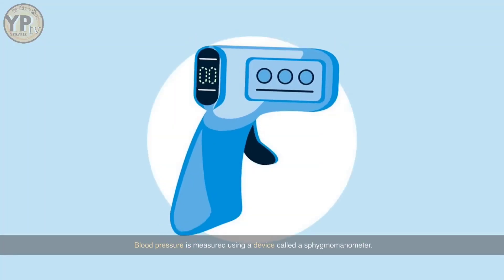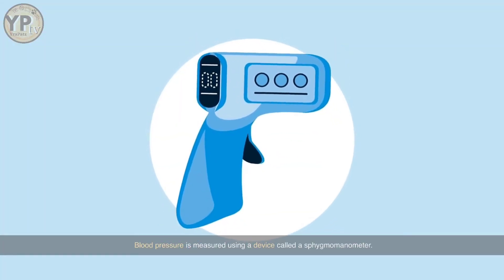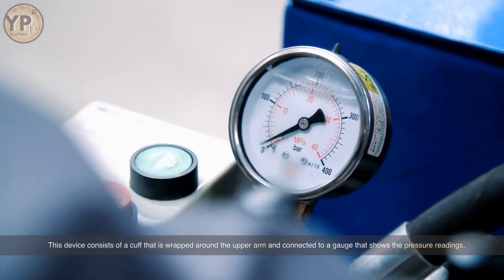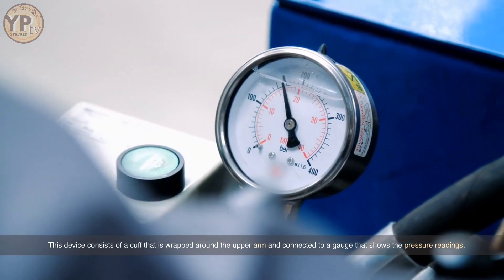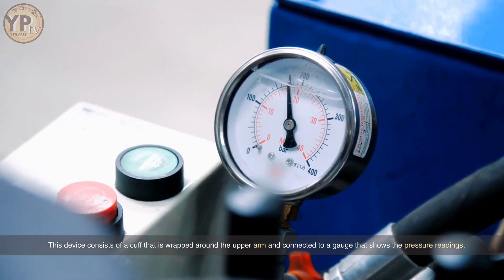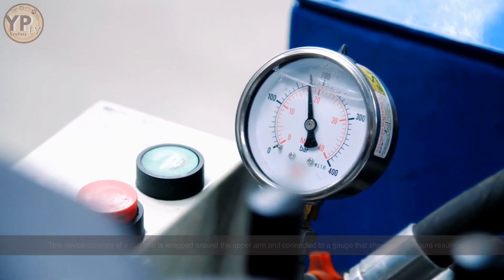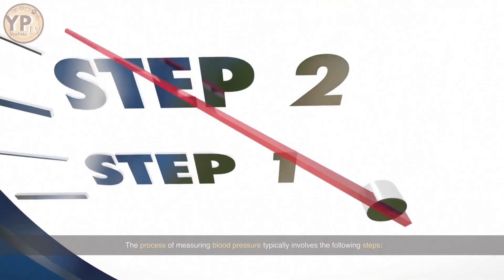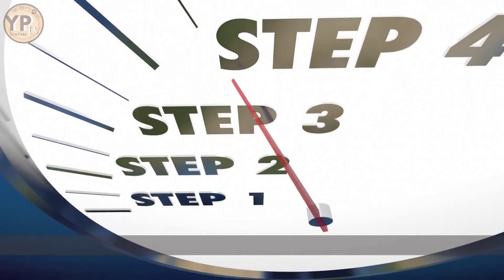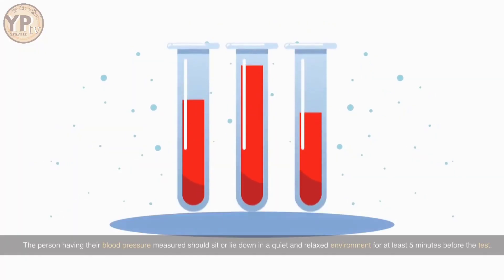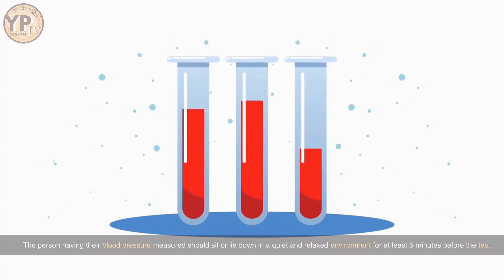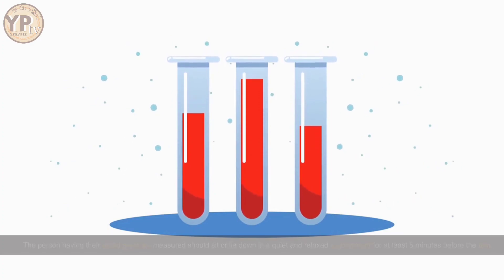Blood pressure is measured using a device called a sphygmomanometer. This device consists of a cuff that is wrapped around the upper arm and connected to a gauge that shows the pressure readings. The person having their blood pressure measured should sit or lie down in a quiet and relaxed environment for at least five minutes before the test.